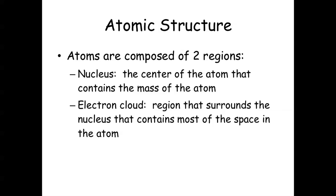So if we were to scale it up, so the size of the nucleus was like a dime, the electron cloud would be the size of the town of Cary. So the electron cloud is huge, the nucleus is tiny, but most of the mass is in the nucleus — there's hardly any mass in the electron cloud.